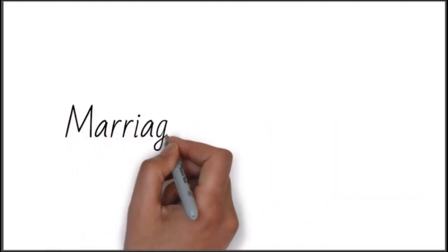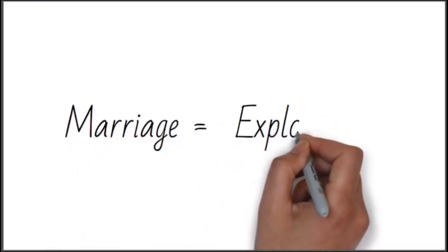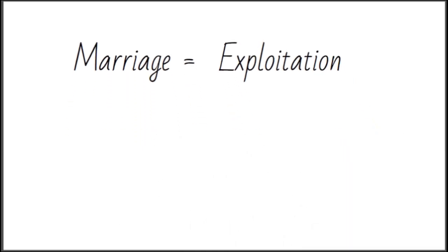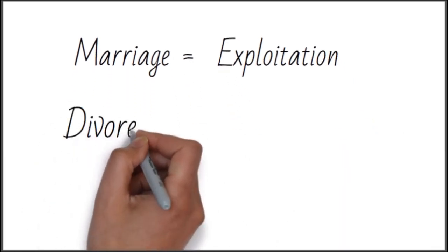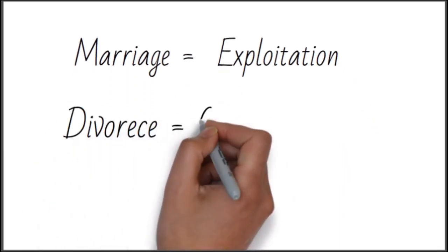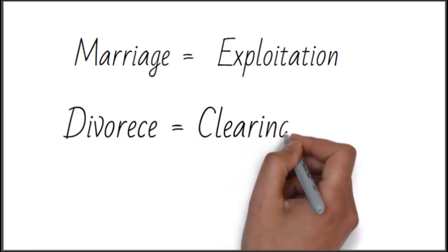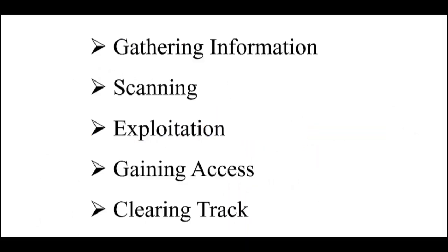Afterwards, they are happily married, and this marriage can be mapped to exploitation. A few years back, they got divorced and separated, and this can be termed as clearing their tracks. So you see, there are five most important steps of cybersecurity.